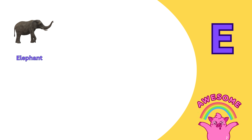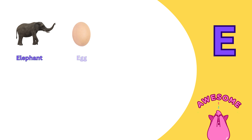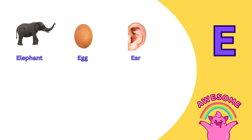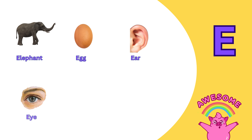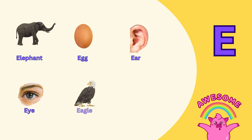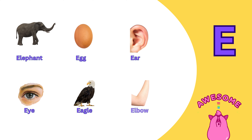E is for elephant. E is for egg. E is for ear. E is for eye. E is for eagle. E is for elbow.